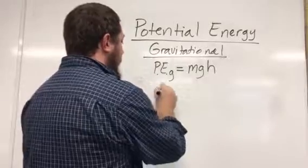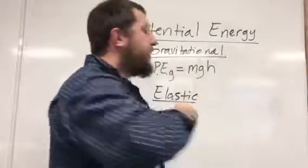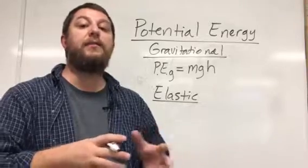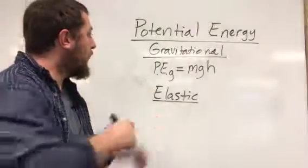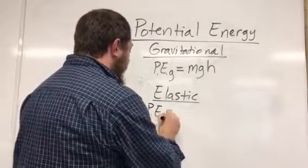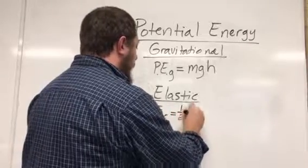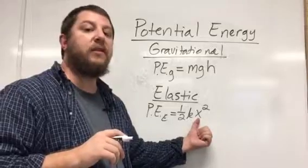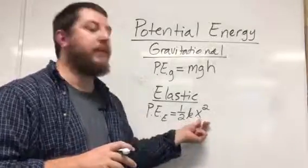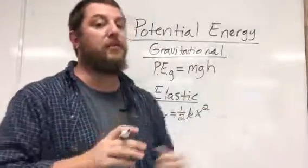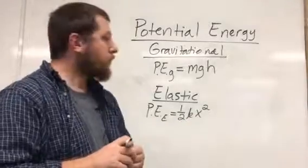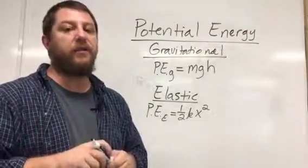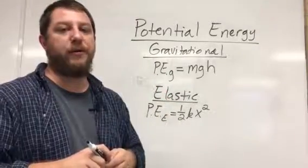Elastic potential energy is the potential energy stored in things like springs and rubber bands. We discussed spring constants before. The elastic potential energy equals one-half times the spring constant times the distance the spring or rubber band is stretched from its equilibrium length, squared. That x represents the length the spring has been stretched beyond its original equilibrium length. These are the two main sources of potential energy we'll encounter, and in the next video we'll do several examples using these concepts.